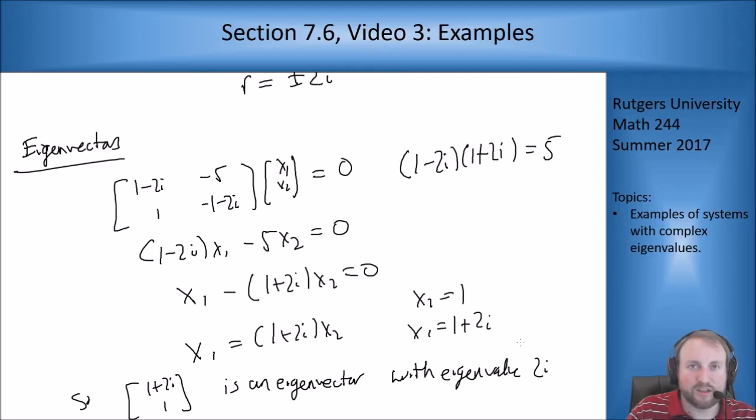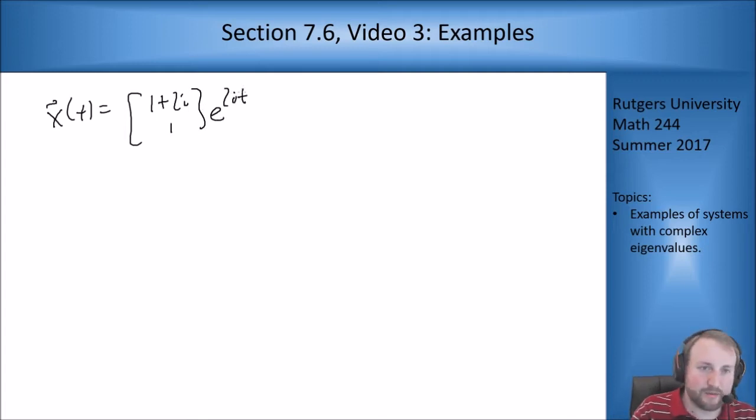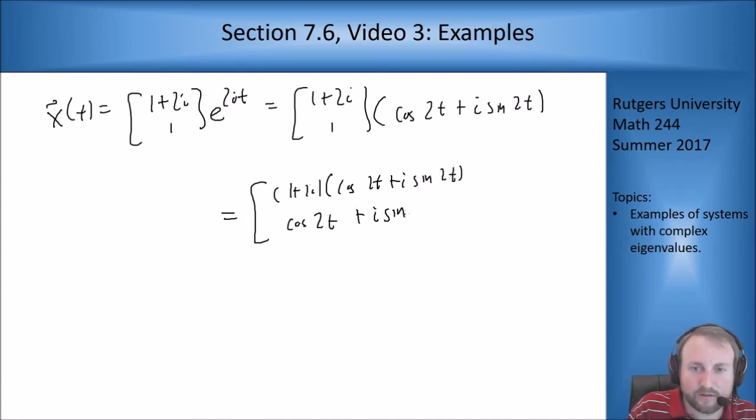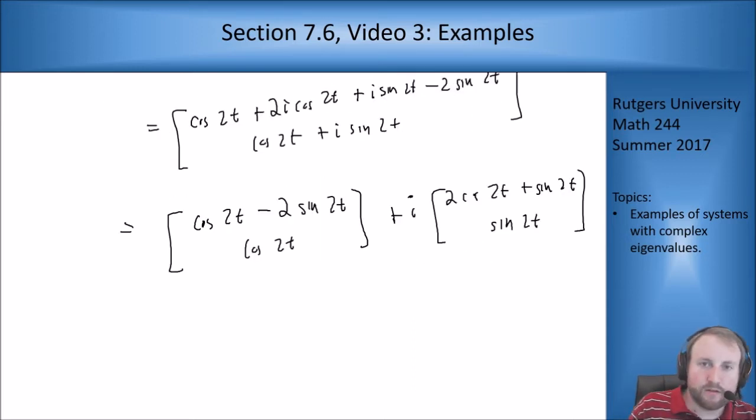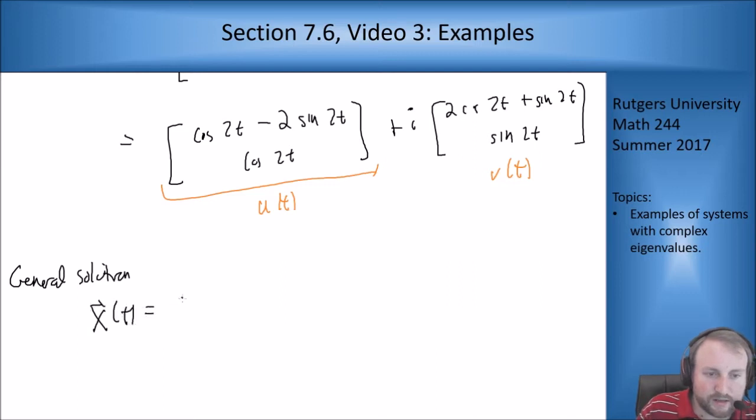So now I want to split things into real and imaginary parts again, because we're going to get x of t equals 1 plus 2i, 1, e to the 2i t as our solution, that we then split into real and imaginary parts. So this is 1 plus 2i, 1, cosine of 2t plus i sine of 2t, which is cosine of 2t plus 2i cosine of 2t plus i sine of 2t plus 2i times i sine of 2t, and then cosine of 2t plus i sine of 2t. And now I can split out the top part to get this, and I can split this into real and imaginary parts. And again, this then gives me my u, this gives me my v, and then my general solution is x of t is c1 times u plus c2 times v.